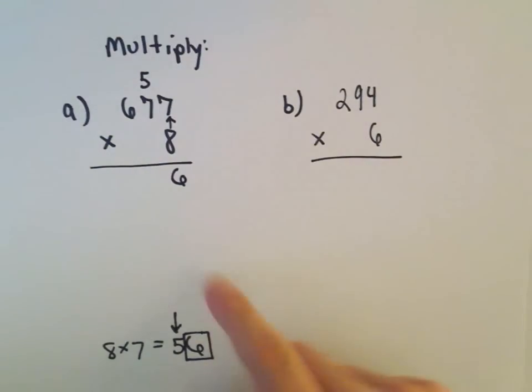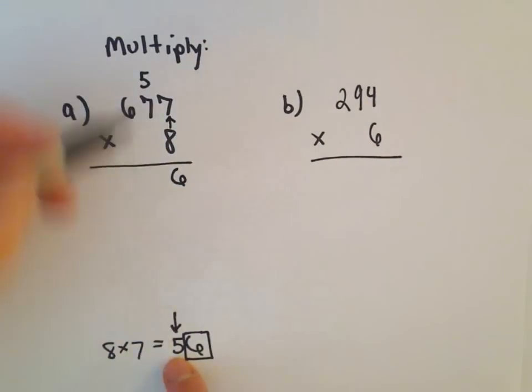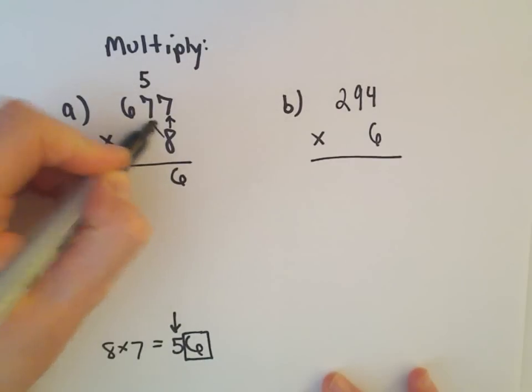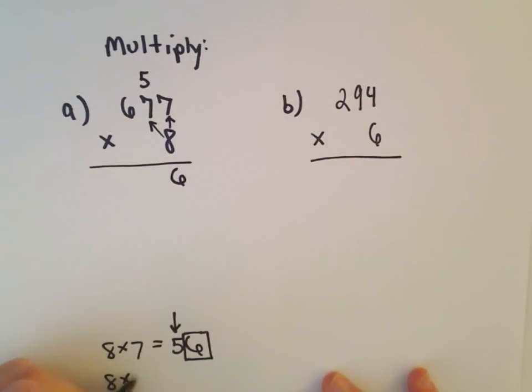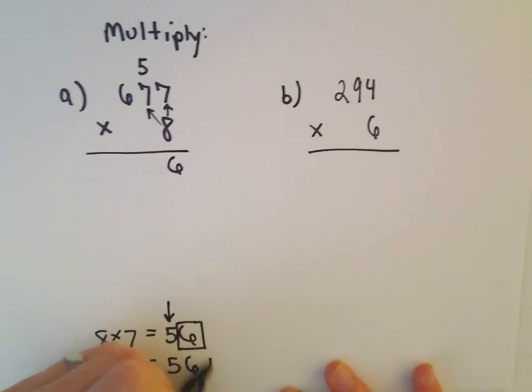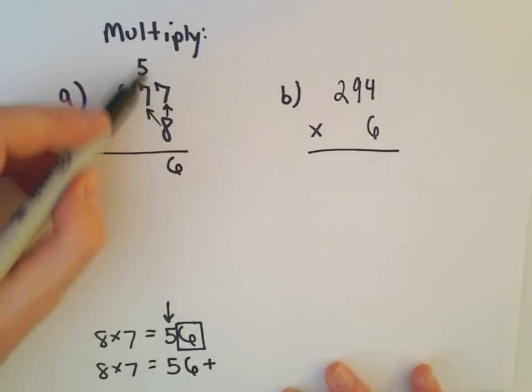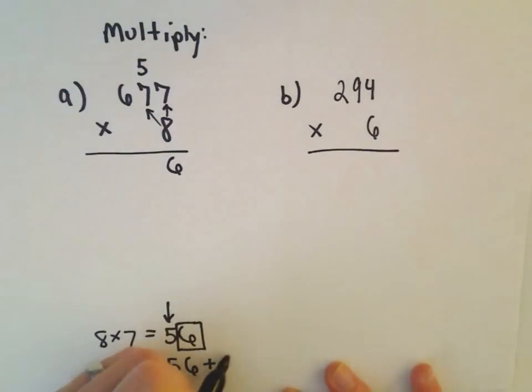And again, that makes sense, right? You would want to carry the 5 that's in the tens place to the tens column. So that's what we're doing. Well, now what we do is we do 8 times 7. Again, I'm just going to multiply. Well, we just said that's 56. And then what we do is we add that extra stuff that we carried over.